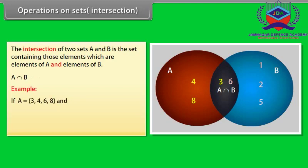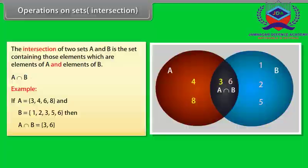Example: if A is equal to {3, 4, 6, 8} and B is equal to {1, 2, 3, 5, 6}, then A intersection B is equal to {3, 6}. Look at this diagram now. This dark portion indicates A intersection B.